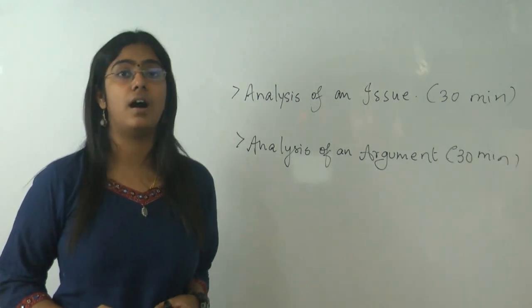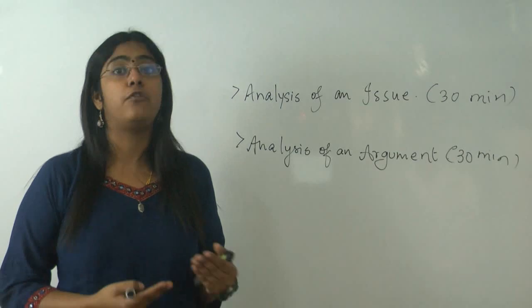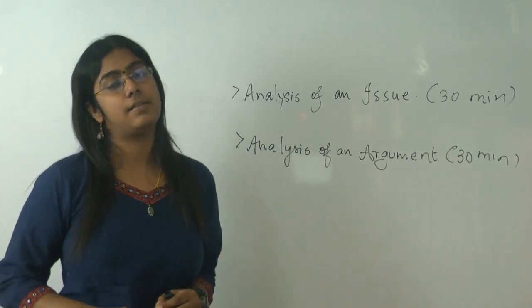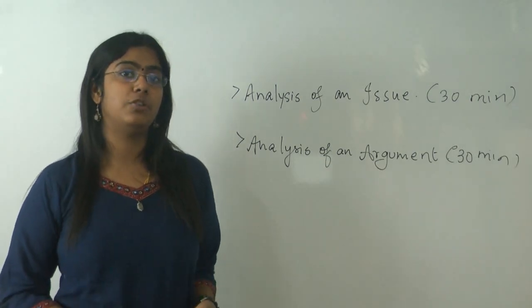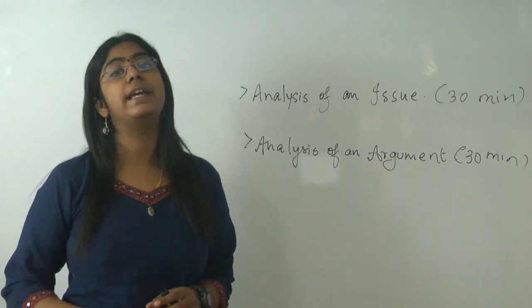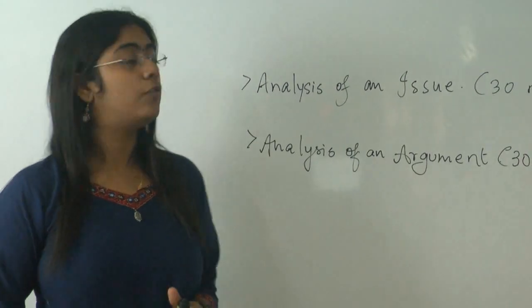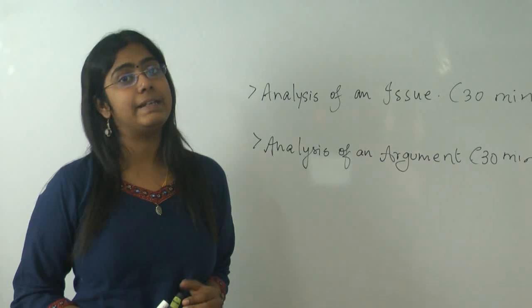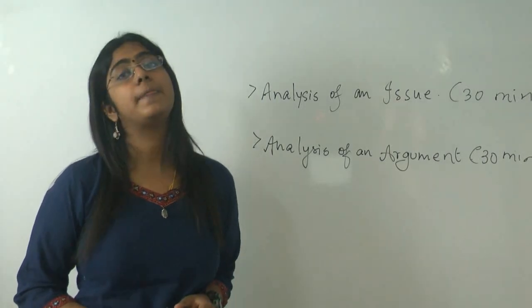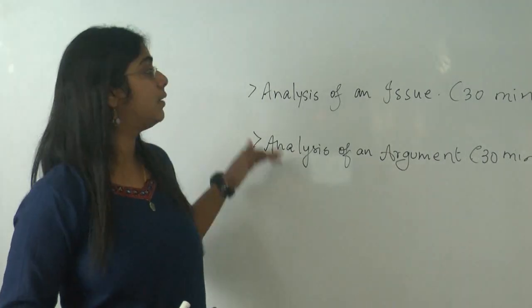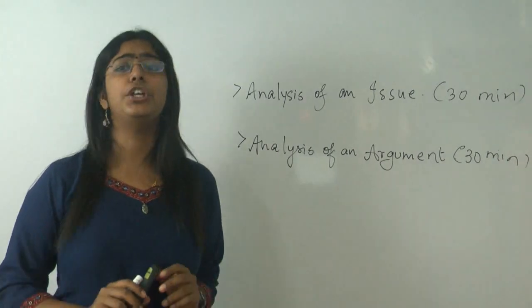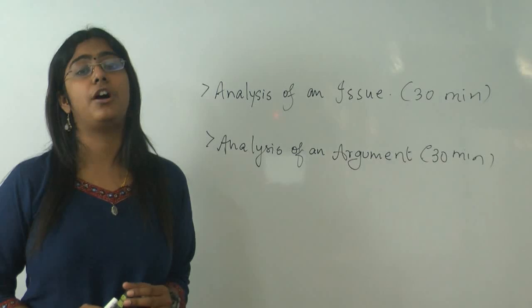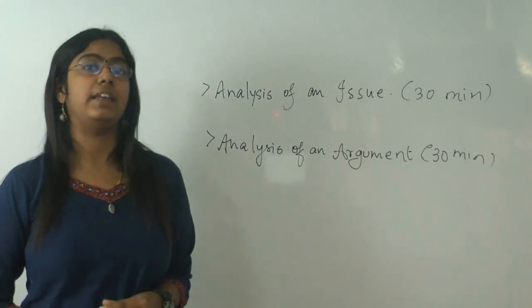You are to present an argument defending for the topic or offending meaning you go against the topic. So you present a very logical argument favoring or against the given issue topic. Now we move on to the next task analysis of an argument. That again is for 30 minutes. Here it is dynamically opposite to what you do in the first topic. Here you have an argument that is already given to you. And it is your job to find out flaws if any in that argument.